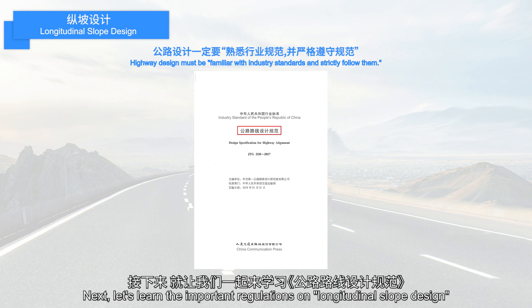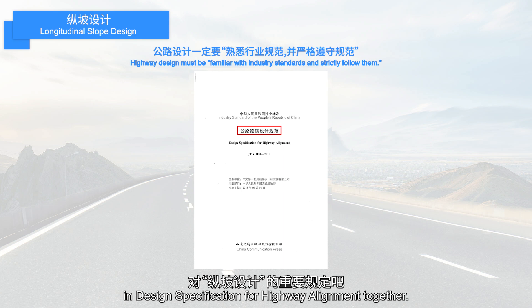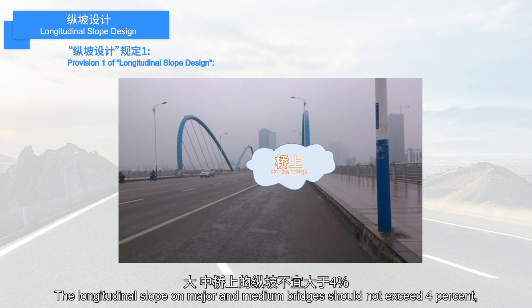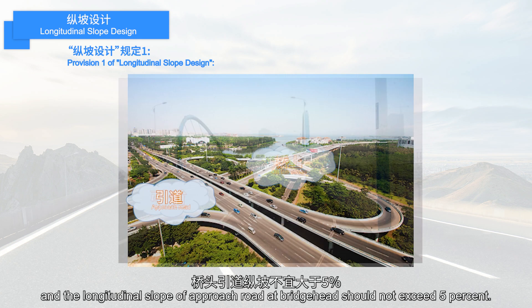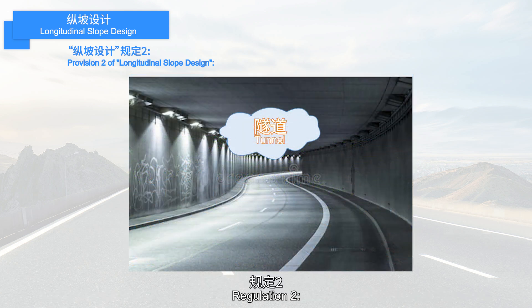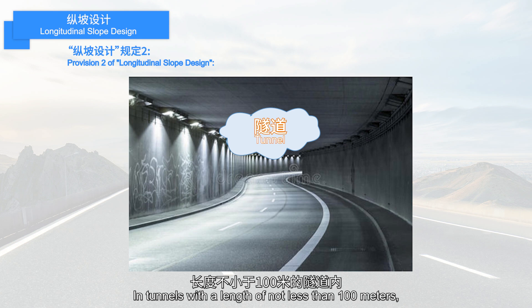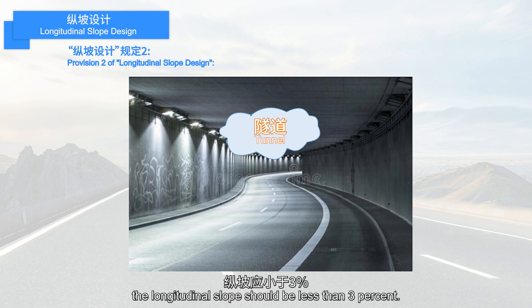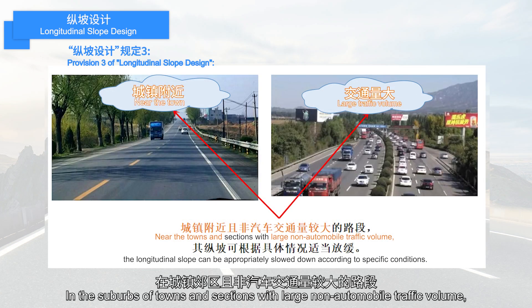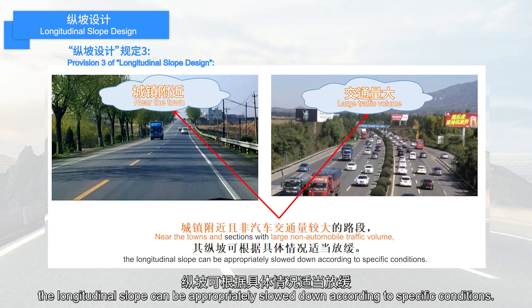Let's learn the important regulations on longitudinal slope design from the design specification for highway alignment. Regulation 1: the longitudinal slope on major and medium bridges should not exceed 4%, and the longitudinal slope of the approach road at the bridgehead should not exceed 5%. Regulation 2: in tunnels with a length of not less than 100 meters, the longitudinal slope should be less than 3%. Regulation 3: in the suburbs of towns and sections with large non-automobile traffic volume, the longitudinal slope can be appropriately reduced according to specific conditions.